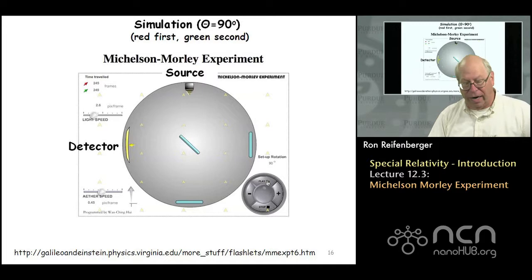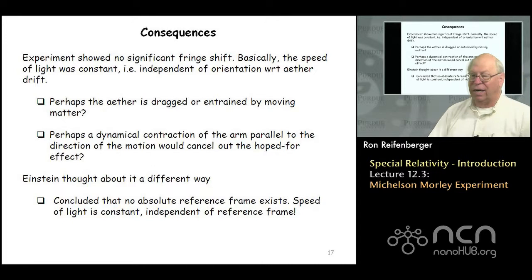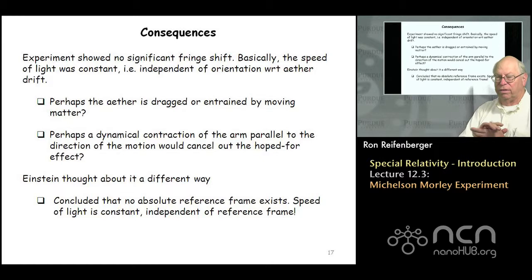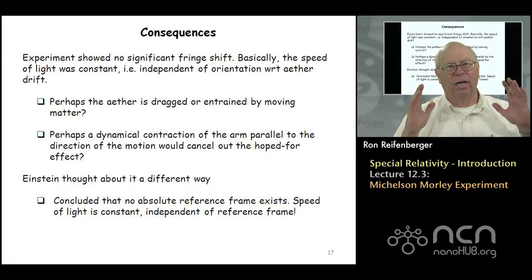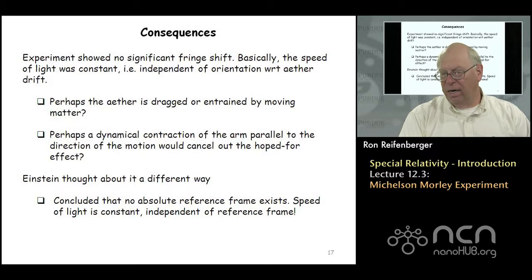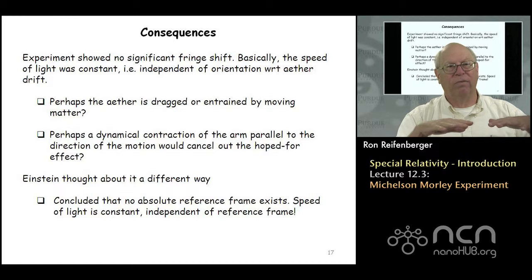The interesting thing is when they did the experiment, they didn't see any effect. No matter what orientation the interferometer was positioned in, no matter what time of the year or what direction the earth was moving around the sun, they saw absolutely no shift in the interferometer pattern. This led them to conclude, rather surprisingly, that the speed of light was constant, independent of its orientation with respect to this so-called ether drift.